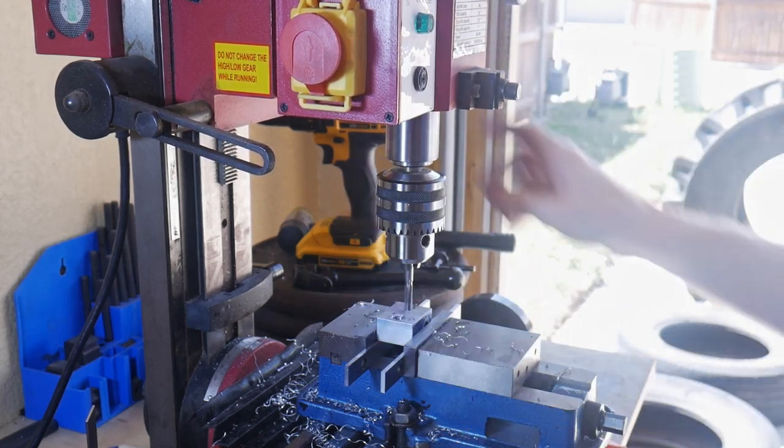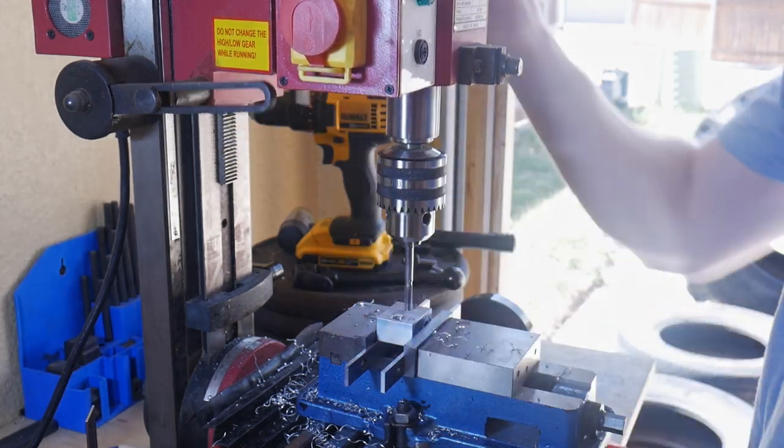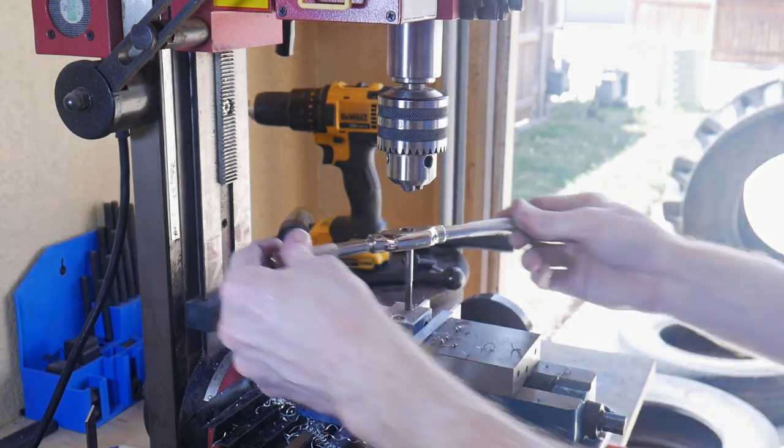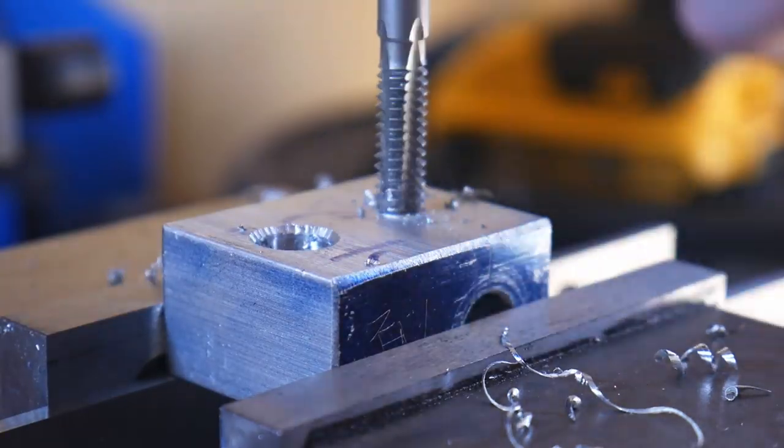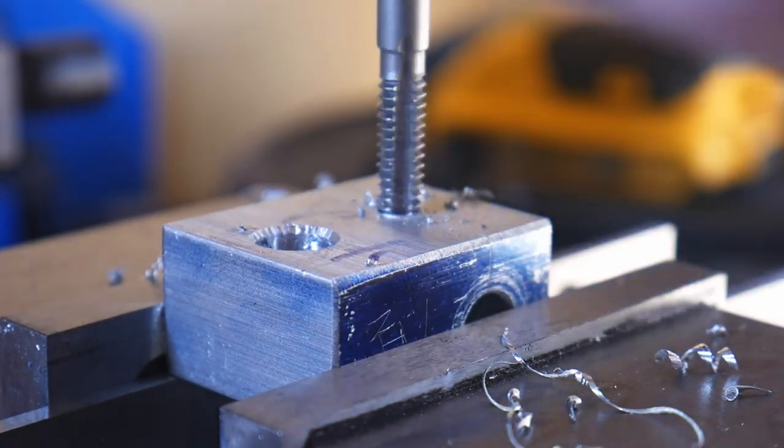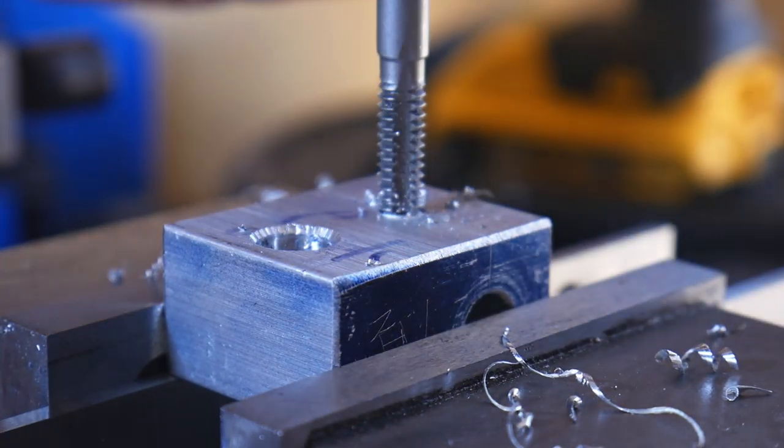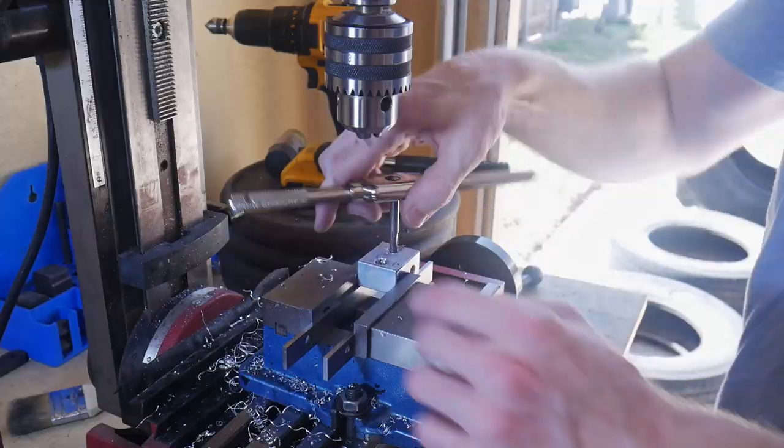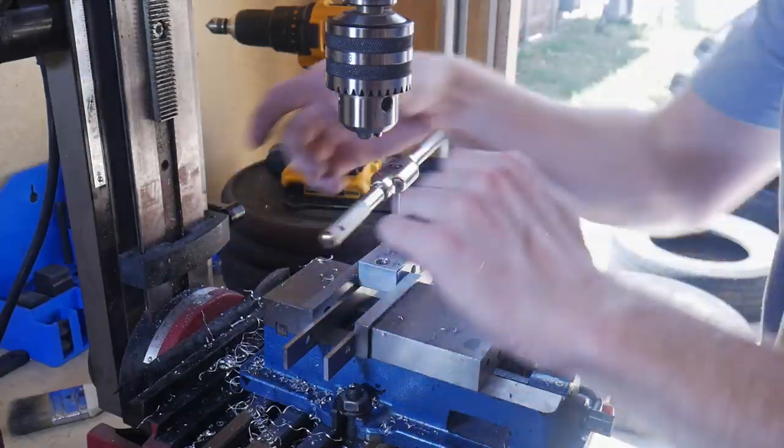After I have that number 7 hole drilled, I'll use my chuck to align the tap into the piece so I have a nice straight tapped hole. This didn't take that long because aluminum cuts pretty easy.